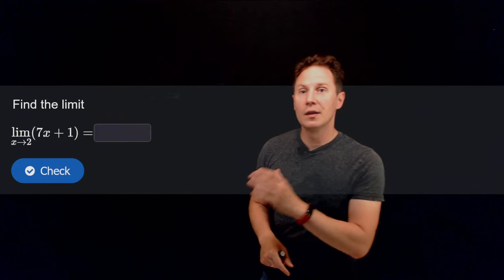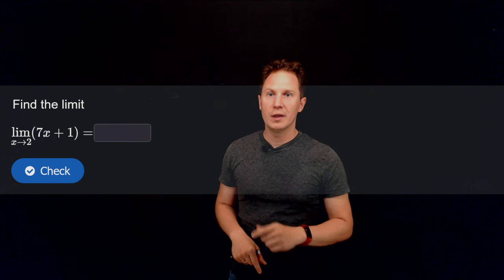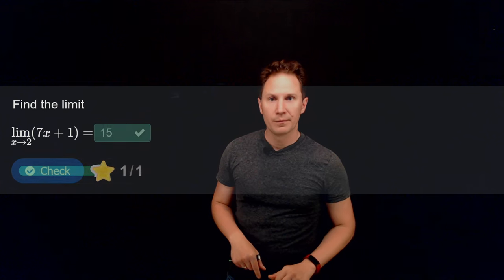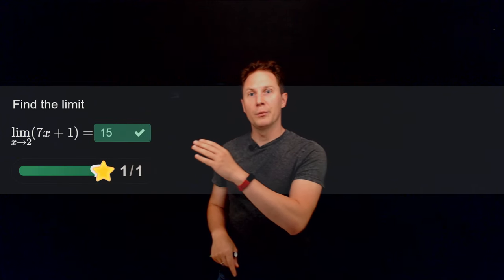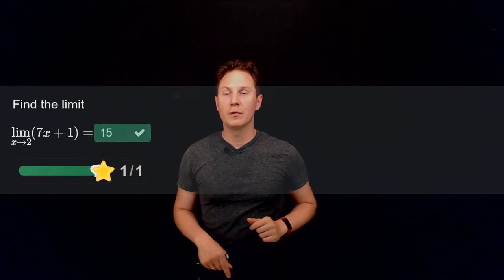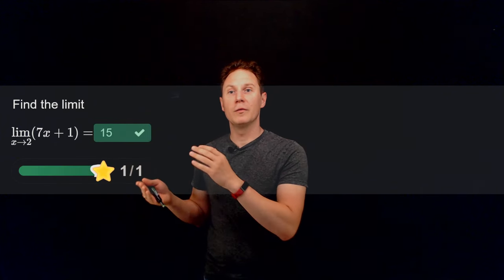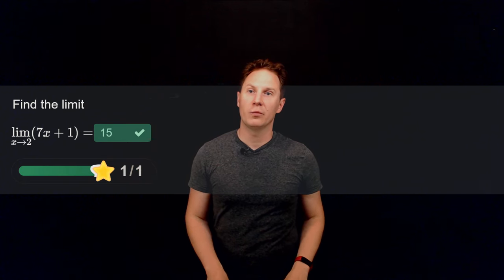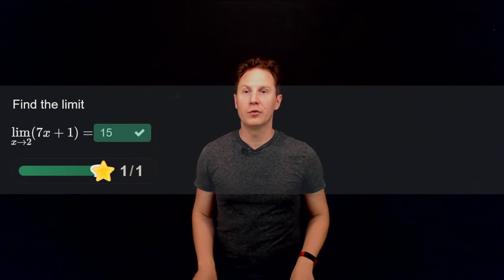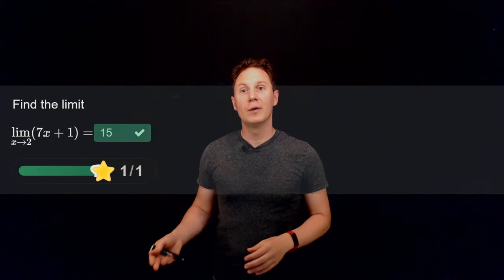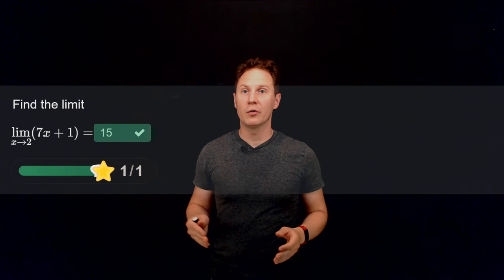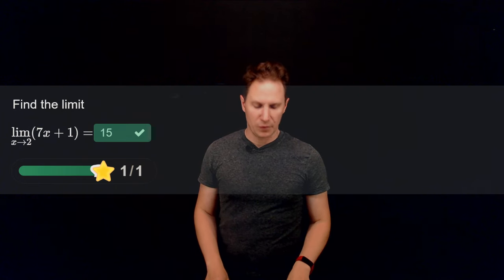Find the limit as x approaches 2 of 7x + 1. Here you can simply evaluate 7x + 1 at x = 2 to get 7 × 2 + 1 = 15, so the limit is 15.